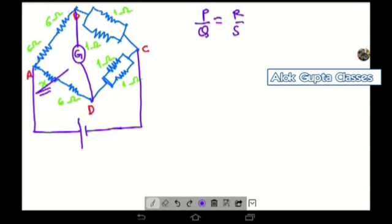So Wheatstone bridge principle: if the potential difference is zero, then P by Q is equal to R by S. This branch is P, this branch is Q, this branch is R, and this branch is S.